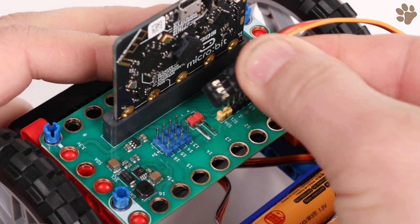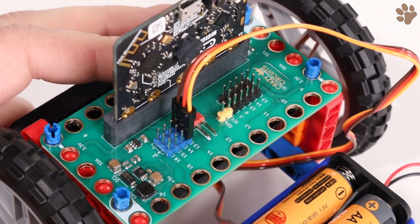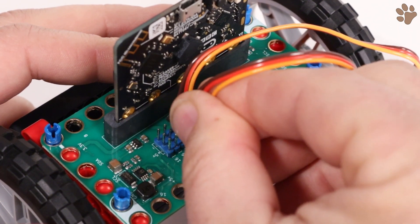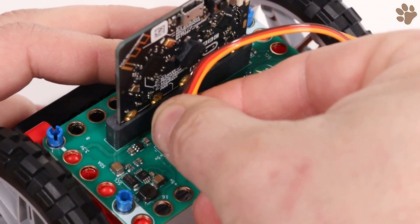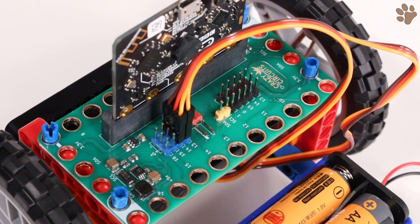Plug the connector for the left servo into the row for pin 13 in the 5 volt blue zone. Plug the right servo connector into the row for pin 14. Make sure that the orange wire faces the number, the red wire is by the plus, and the brown wire is by the minus.